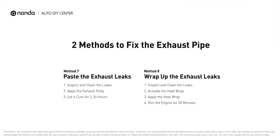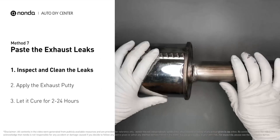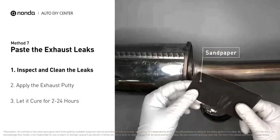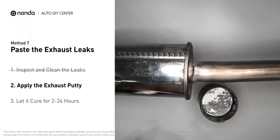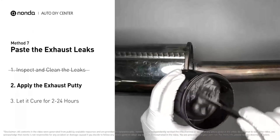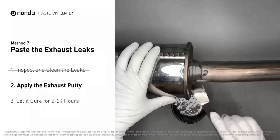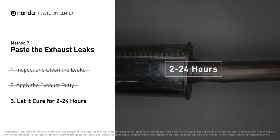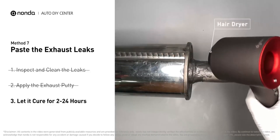Here are two methods to repair the exhaust pipe. Method seven: paste the exhaust leaks. If you have a leak, get some exhaust putty to seal it up. First, use sandpaper and a wet wipe to clean the leaking area for better application. Stir the paste well to activate it, then apply and press the paste to seal the leaking area. After application, don't start the engine because the positive pressure from the exhaust will blow out the paste. Let it cure for 2 to 24 hours depending on external temperature — the hotter it is, the quicker it will cure. You can use a hairdryer to heat it up and make it cure faster.